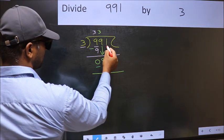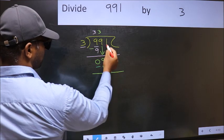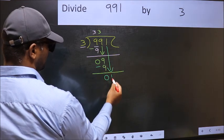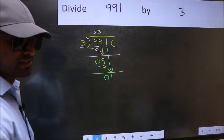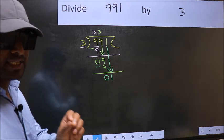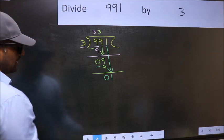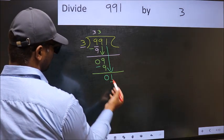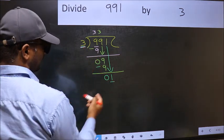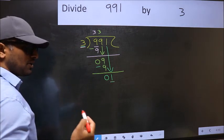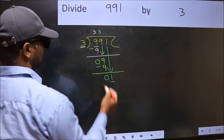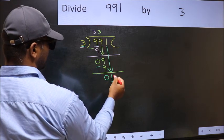After this, bring down the beside number. So 1 down. After this step, the mistake happens. And the mistake is this. Here we have 1 and here 3. 1 is smaller than 3. So what many do is, they directly put a dot and take 0.